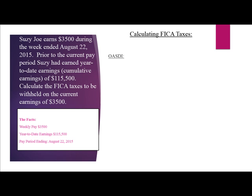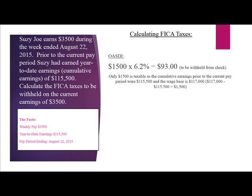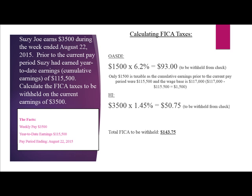For OASDI, only $1,500 is taxable: $1,500 times 6.2% equals $93 to be withheld. Why only $1,500? Because cumulative earnings prior to this pay period were $115,500 and the wage base is $117,000. $117,000 minus $115,500 equals $1,500 in taxable wages. The HI tax is $3,500 times 1.45%, equaling $50.75 to be withheld. Total FICA to be withheld is $143.75, and the employer will match this.